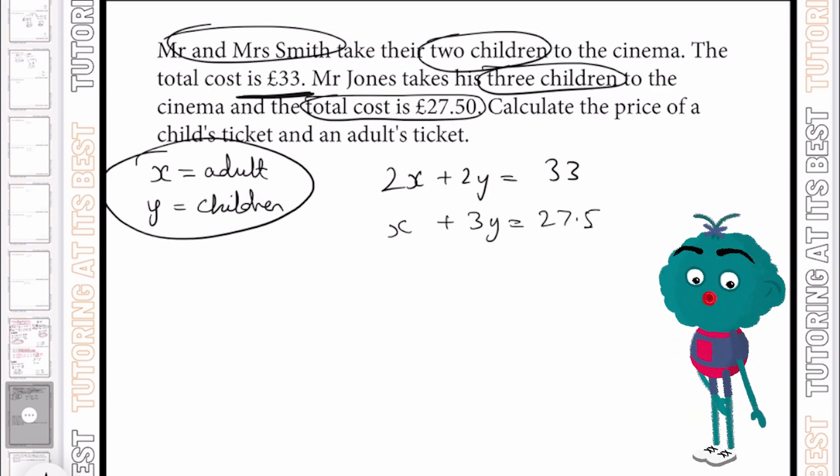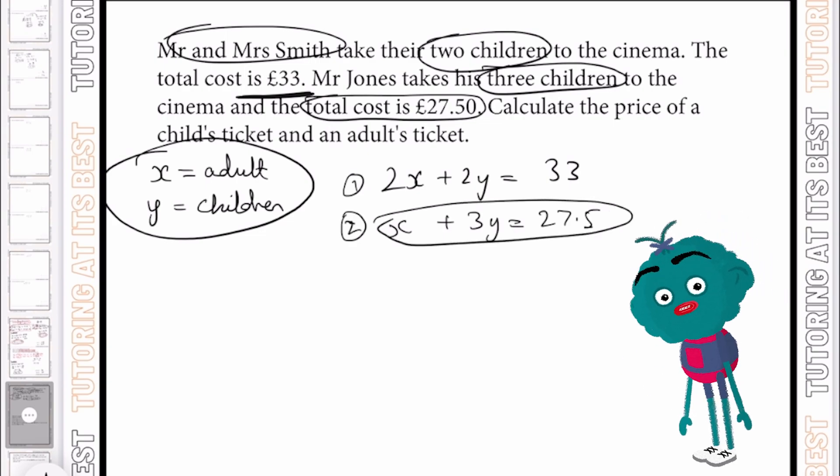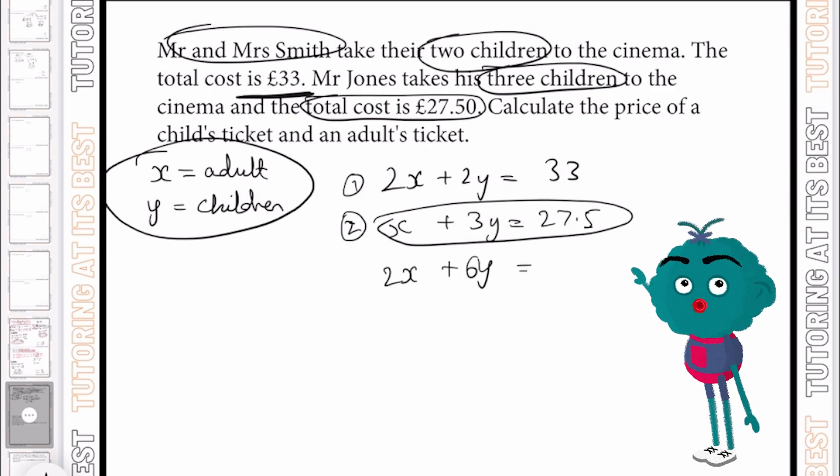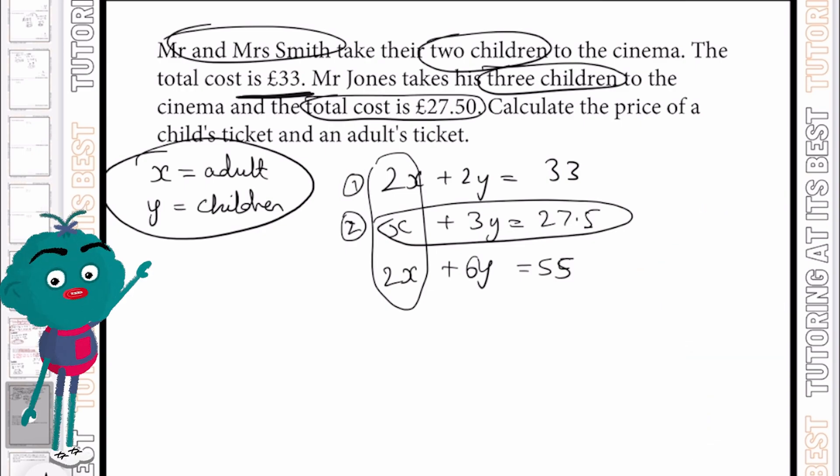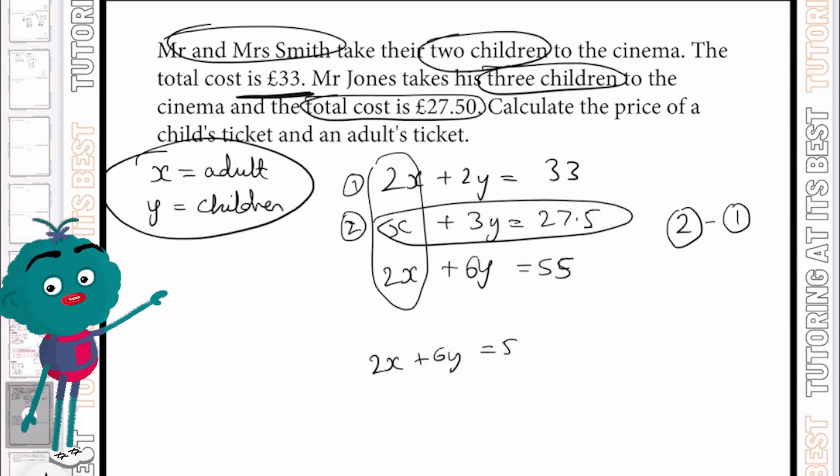Again, we can now simply double our second equation here to make the coefficient the same. And that will give us 2x plus 6y, which is £55. And now we've done that, we can simply eliminate this. And by doing so, we're going to have equation two take away equation number one. Let's have 2x plus 6y, which equals 55, and 2x plus 2y, which equals 33.